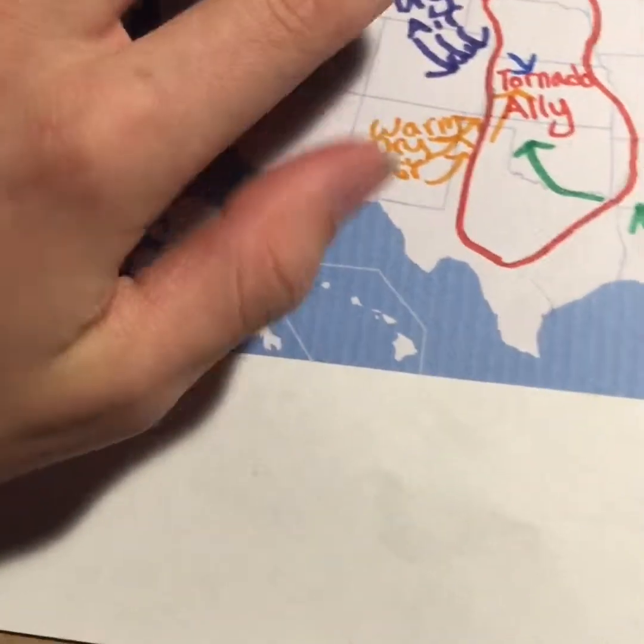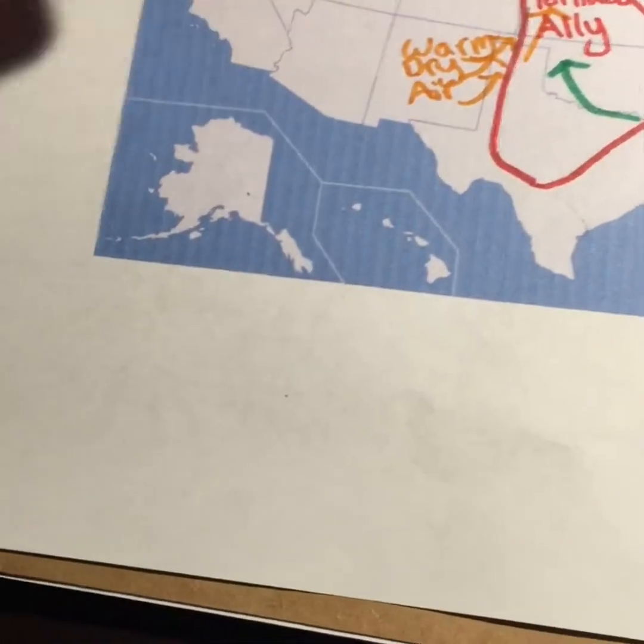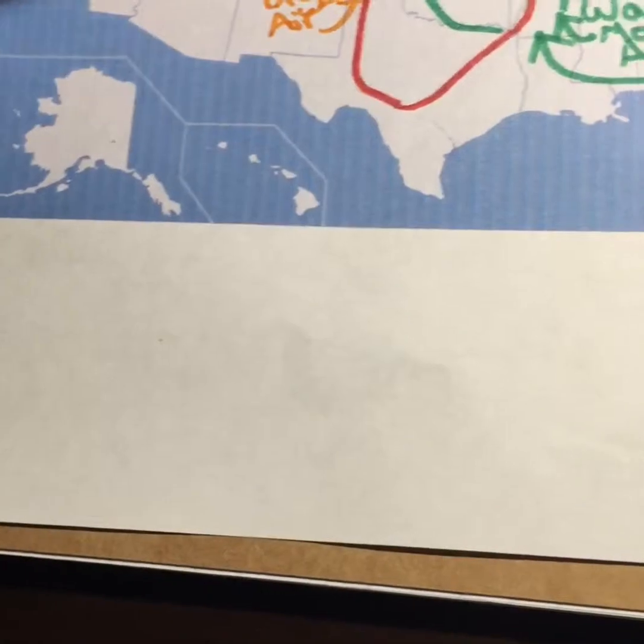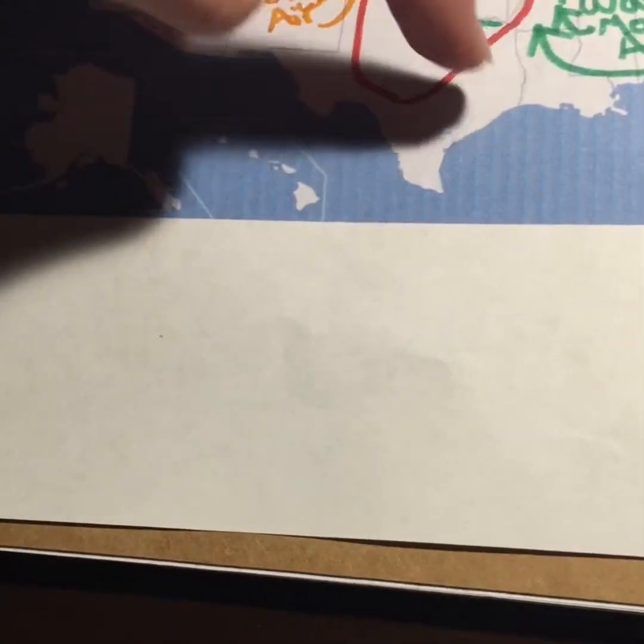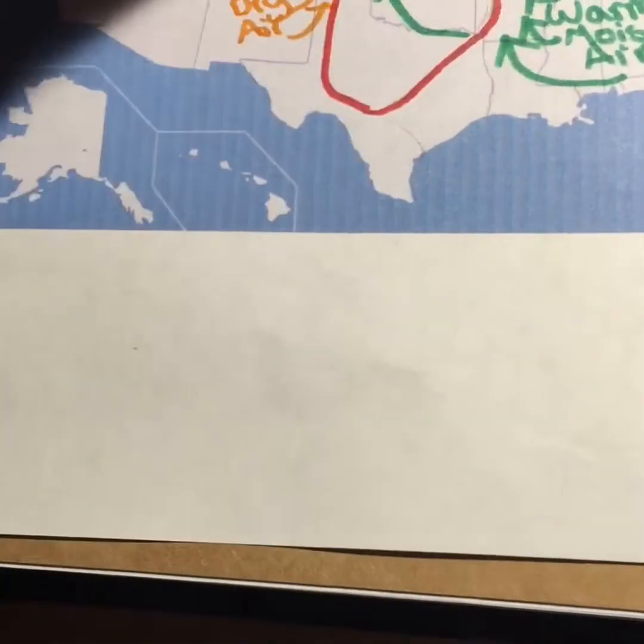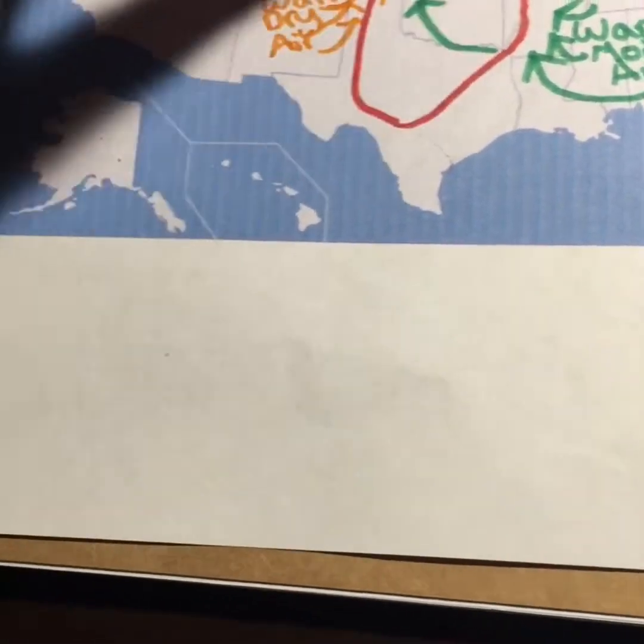Then warm dry air from Arizona and New Mexico will push up this way. So now you have two forces pushing up. And then cold drier air from the north will come down and push, creating a little rotation. And that is what causes the tornadoes.